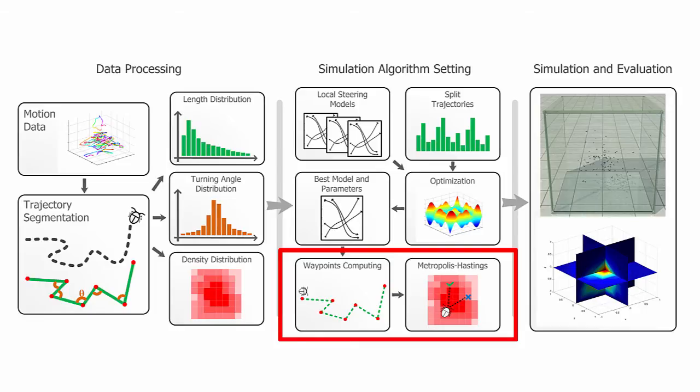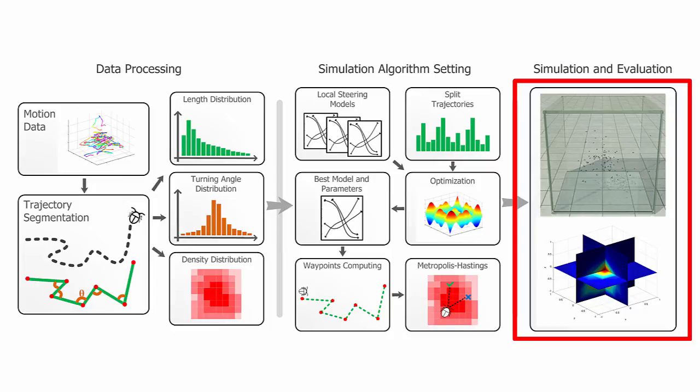To ensure realism at the swarm or macroscopic level, we aim to replicate the previously learned density distribution. To do this, we make sure that the intermediate waypoints satisfy the Metropolis-Hastings criterion with respect to the density distribution. The resulting simulations are then both statistically correct with respect to the noisiness of insects' trajectories and realistic as far as densities are concerned.